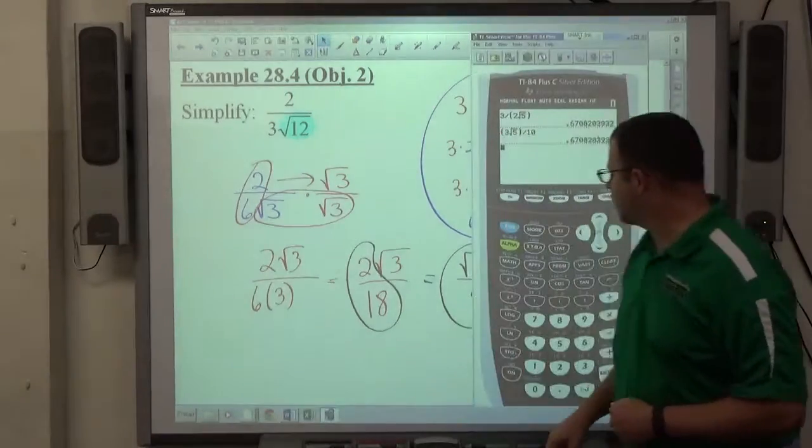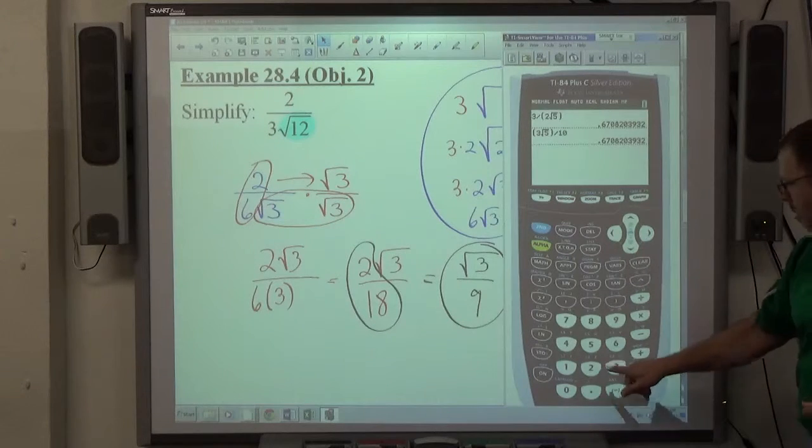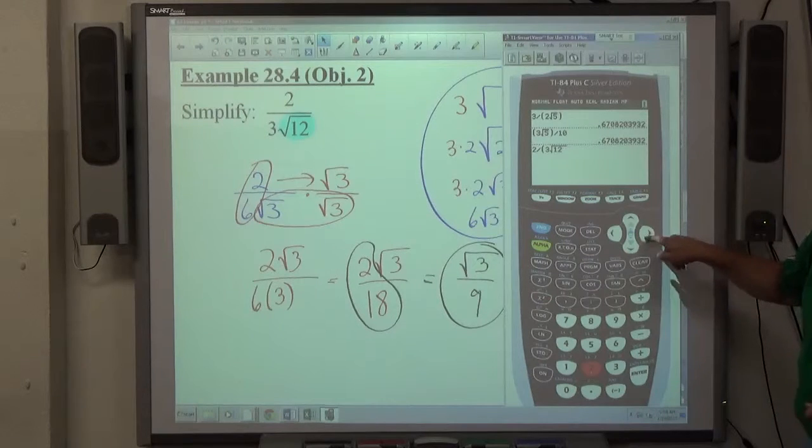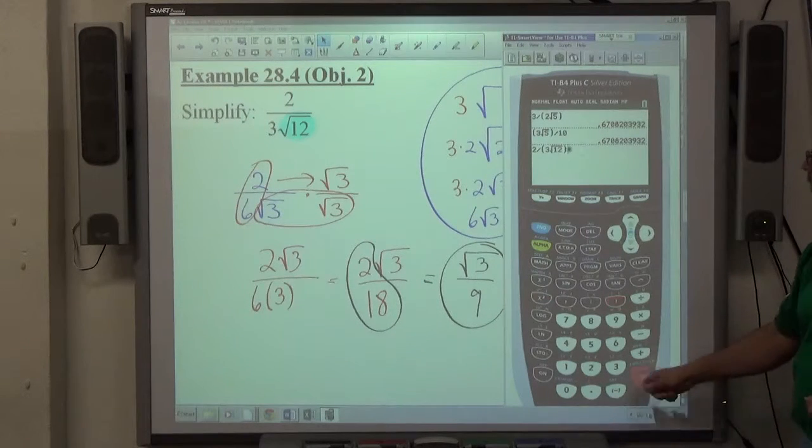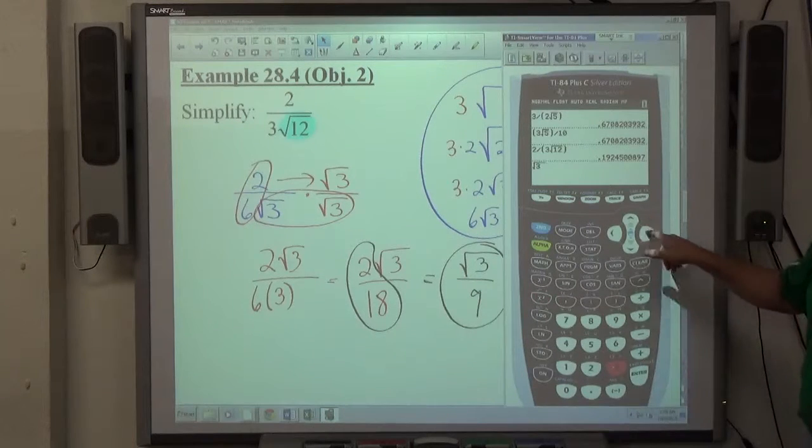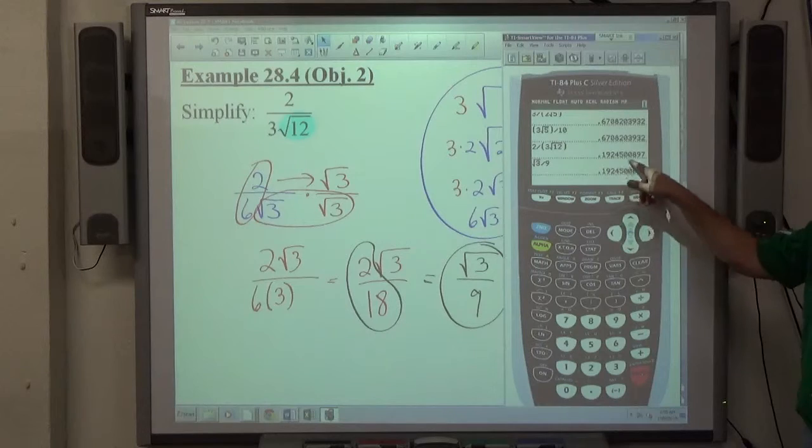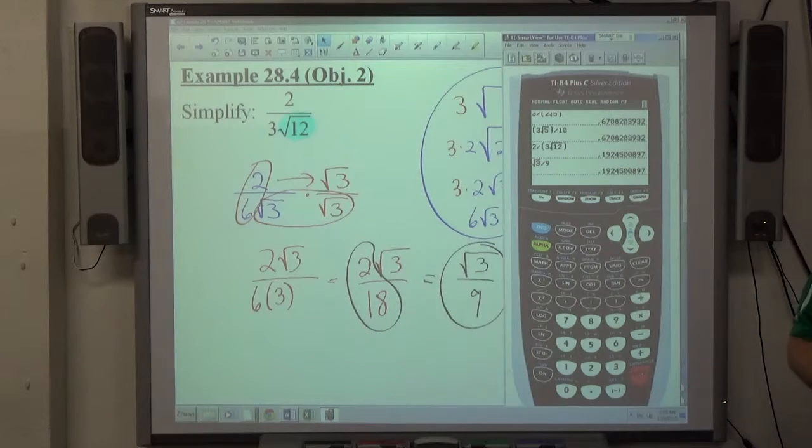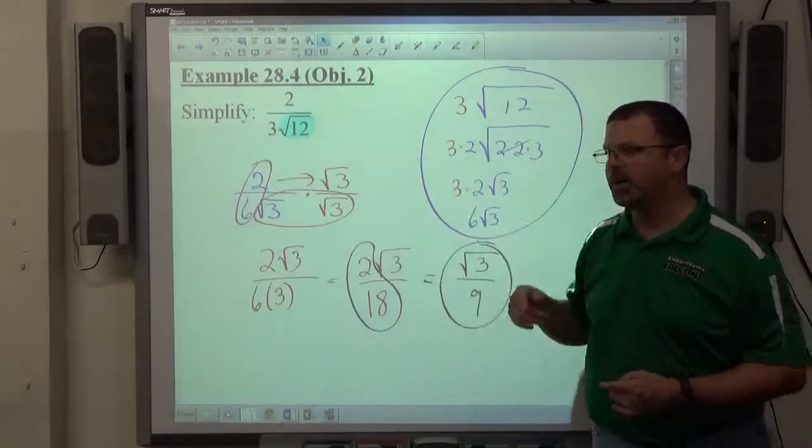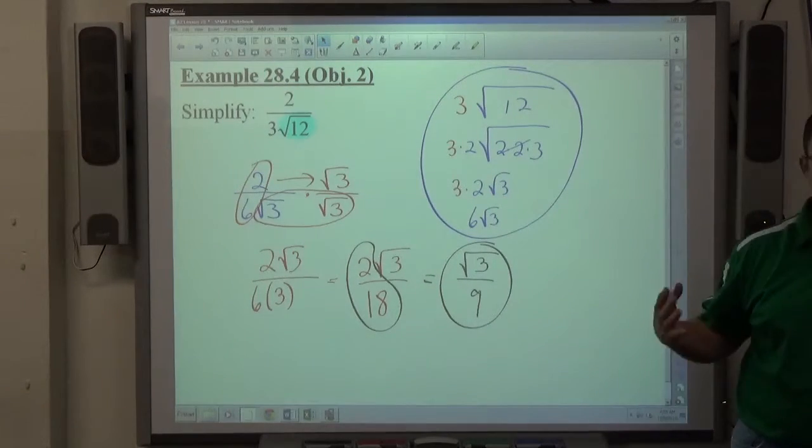And once again, if we verify solution, which is very easy to do on this one, type in the original problem: 2 divided by parentheses, 3 square root 12, get out of the radical, end parentheses. And if I do square root of 3, get out of the radical, divided by 9, it should be the same decimal number, which it is. That verifies that they're equivalent. They should be equivalent because I didn't change the value by multiplying by 1. It has a different form. It has the radical on top, whole number on the bottom. That's what we're looking for.